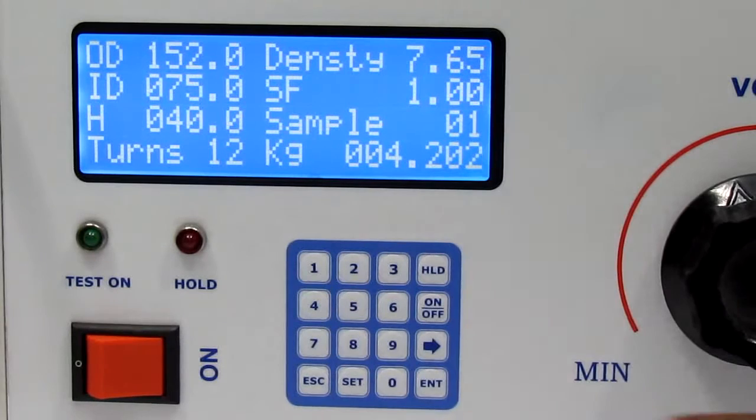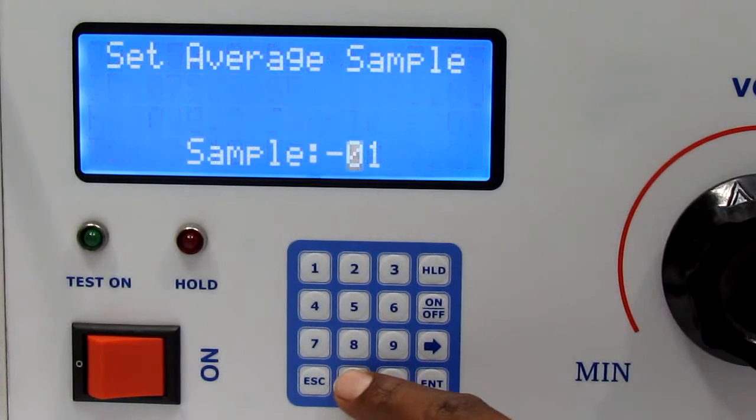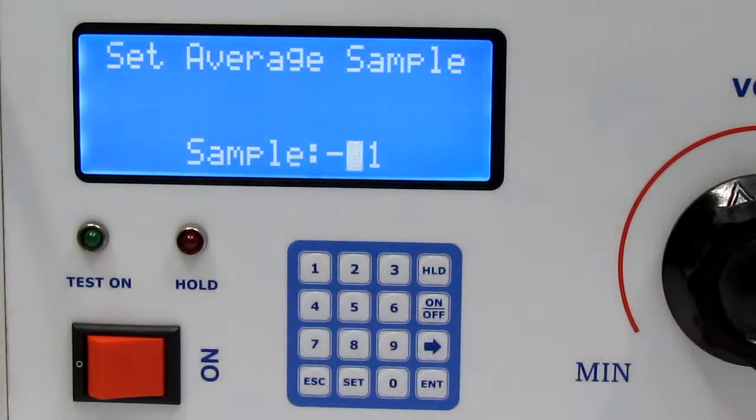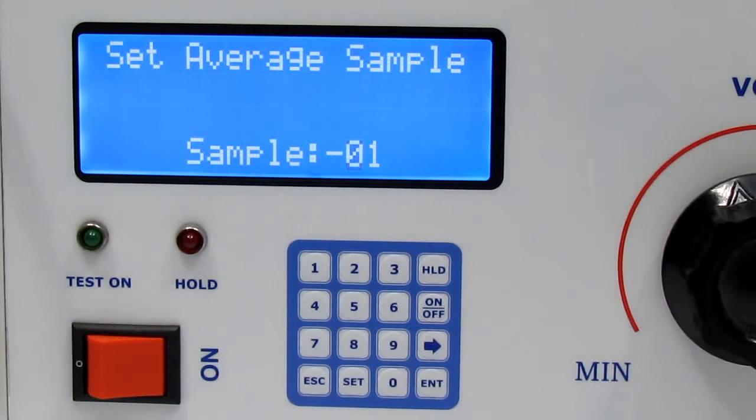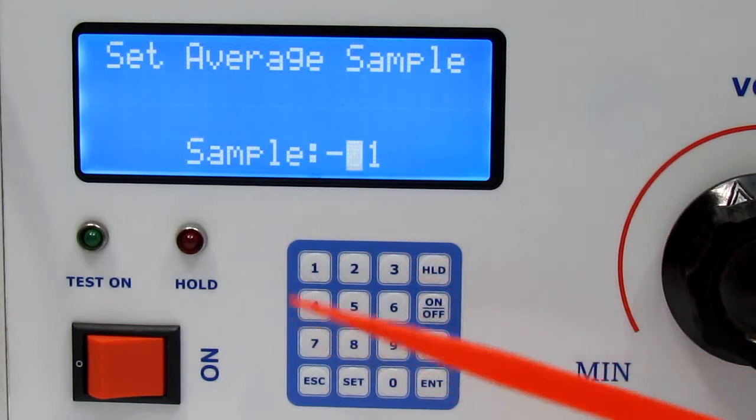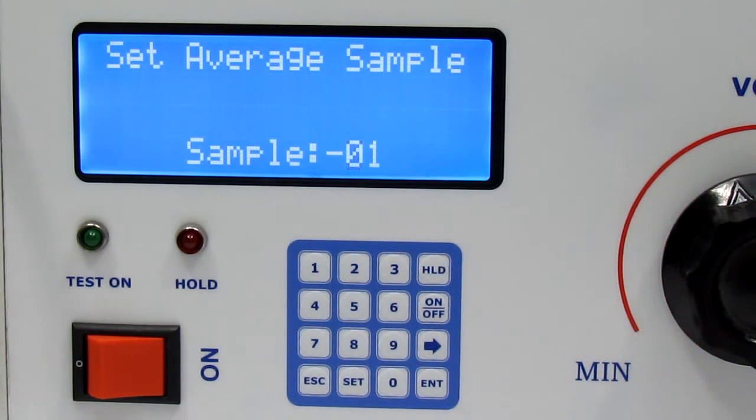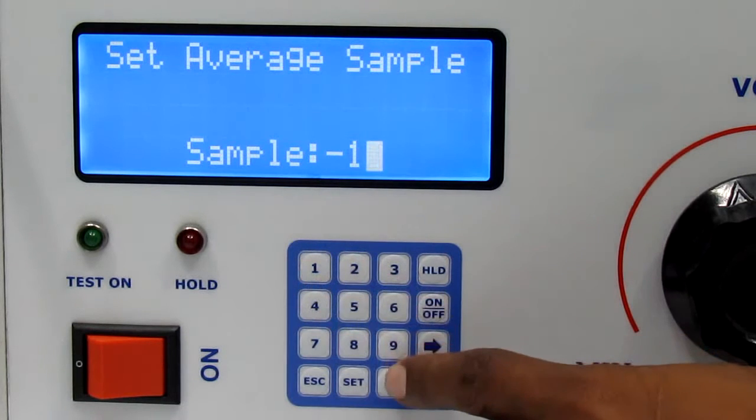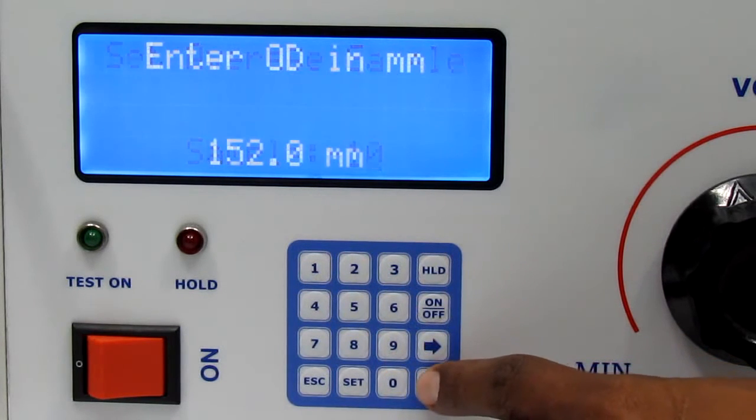Press SET button to enter in mode function. Here you can see set average sample. By using numerical keypad you can enter 1 to 10 average samples and then press enter button.